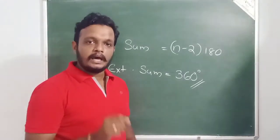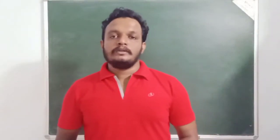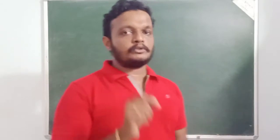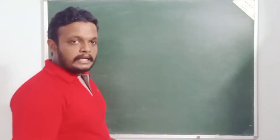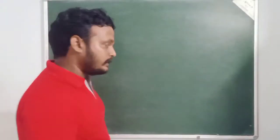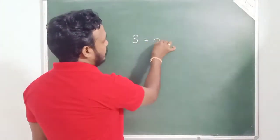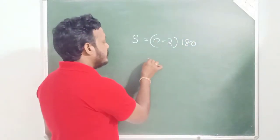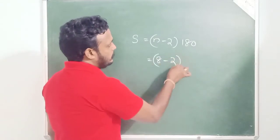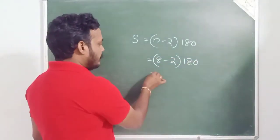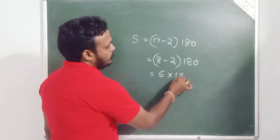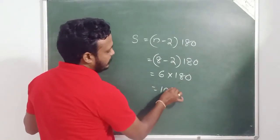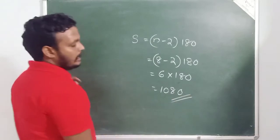Now let's take a look at each interior angle of a regular polygon. If you have each interior angle, you can calculate it. Each interior angle equals (n-2) × 180 divided by n.